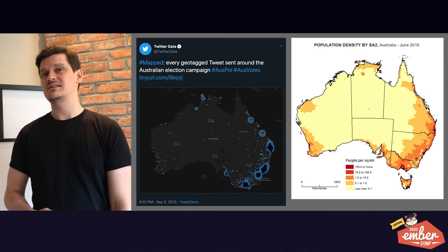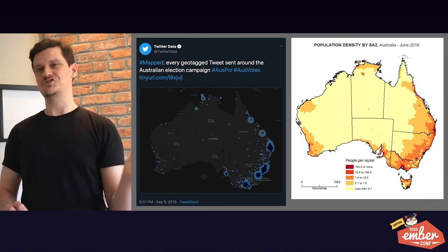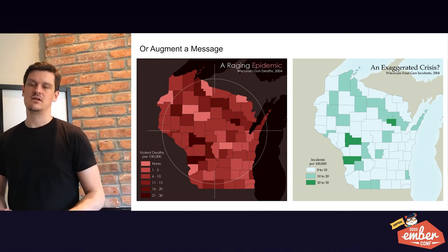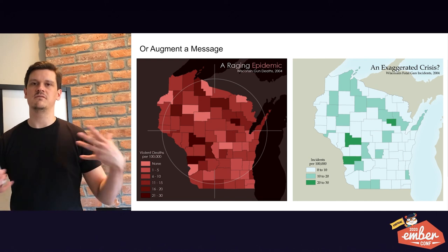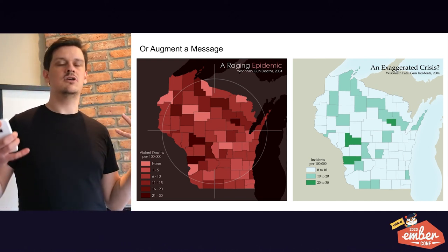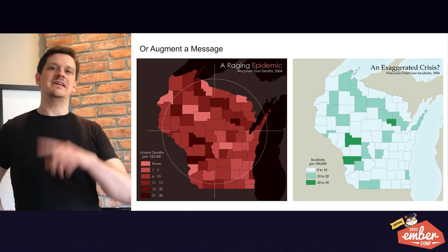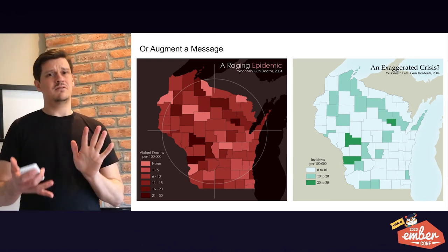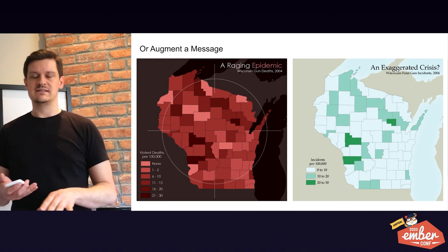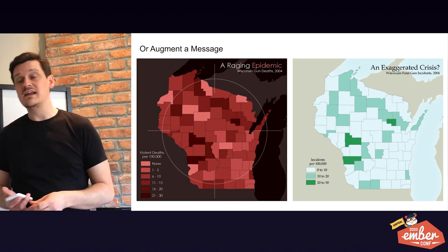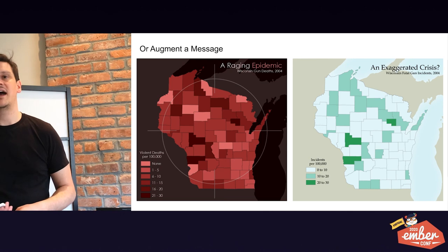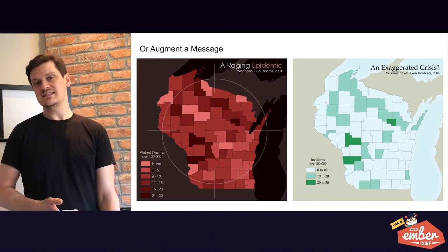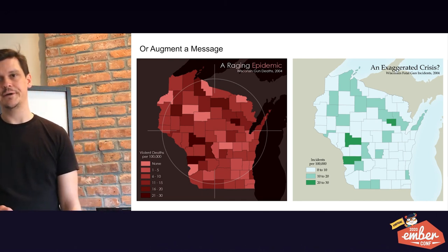Another thing about augmenting a message through maps: there are graphic design choices that could be made. On the left you're talking about gun death — "raging epidemic," black and red, with a crosshair on it. On the bottom left you see granular bins, creating a lot of visual noise, making it look grizzlier. On the right you have the opposite rhetorical angle — fewer bins, and you're not describing "violent deaths," you're describing incidents per hundred thousand or something. These are choices that you can make.